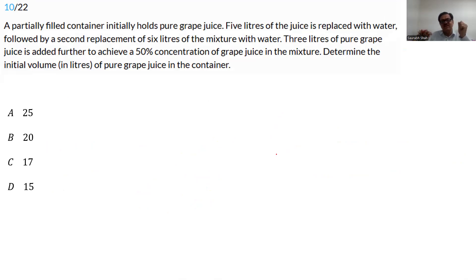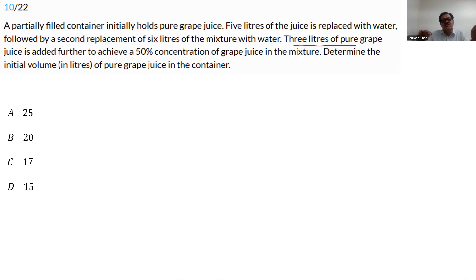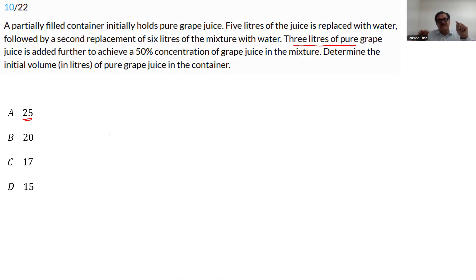The next question involves a mixture — three liters of pure grape juice is added at the end, making it more complex with theory. The simple approach: determine the initial volume by trying the answer options. Assume the answer is 25 liters. We are replacing — not just adding — 5 liters then 6 liters, leaving 25 liters, then adding 3 liters = 28 total.